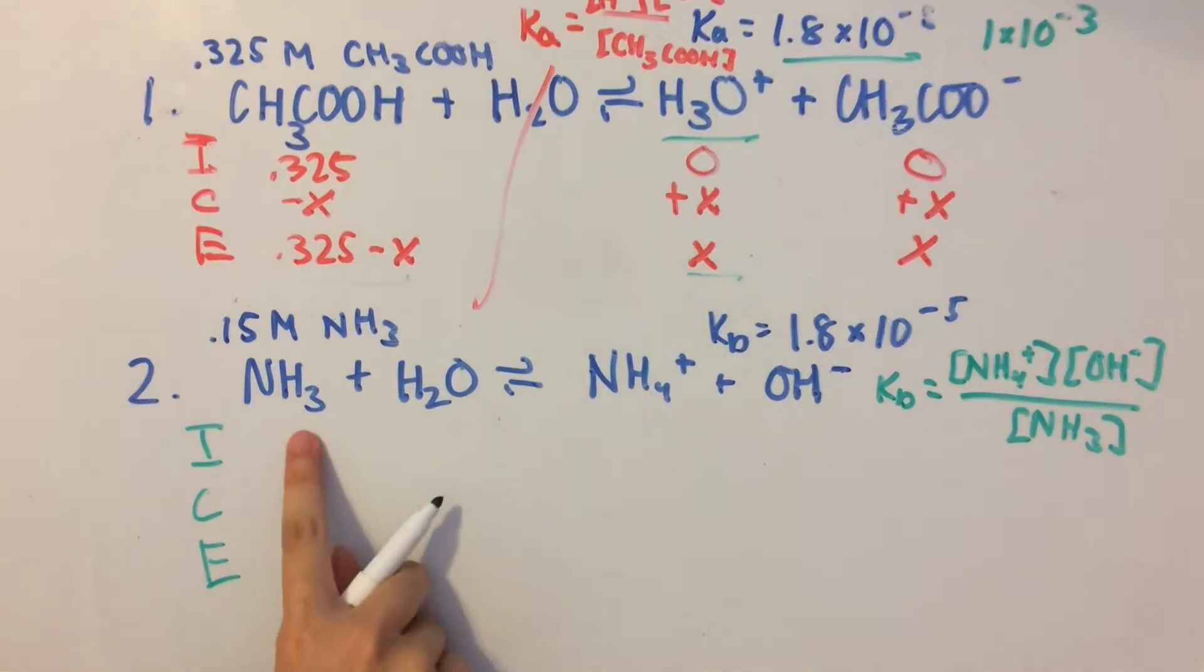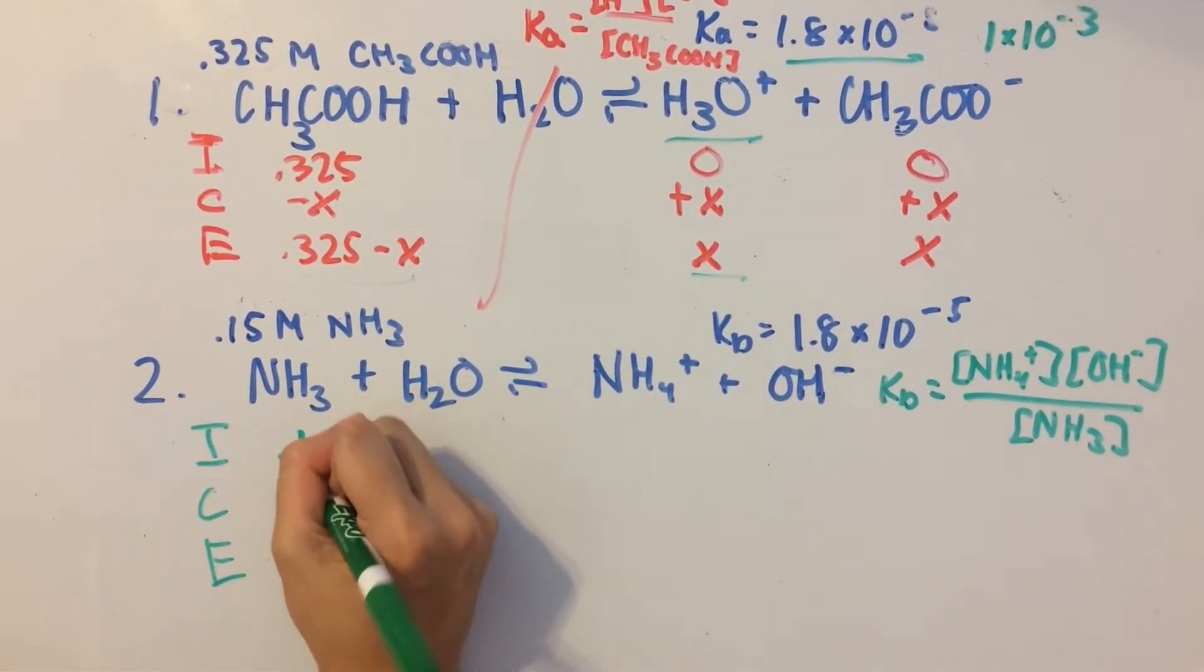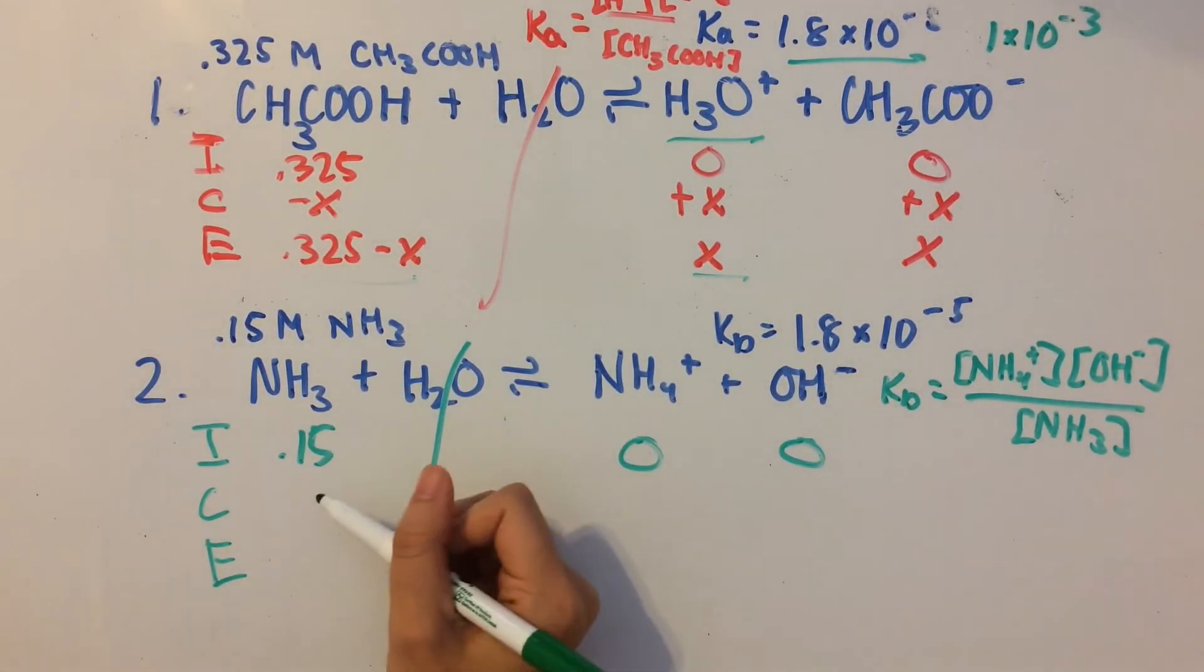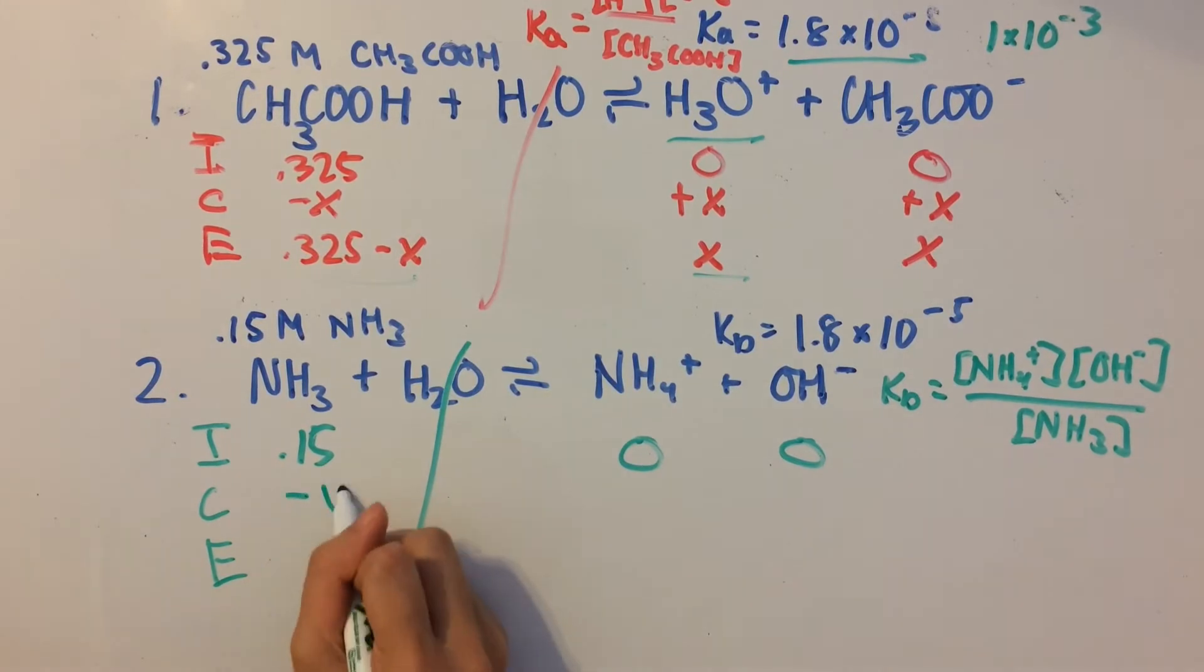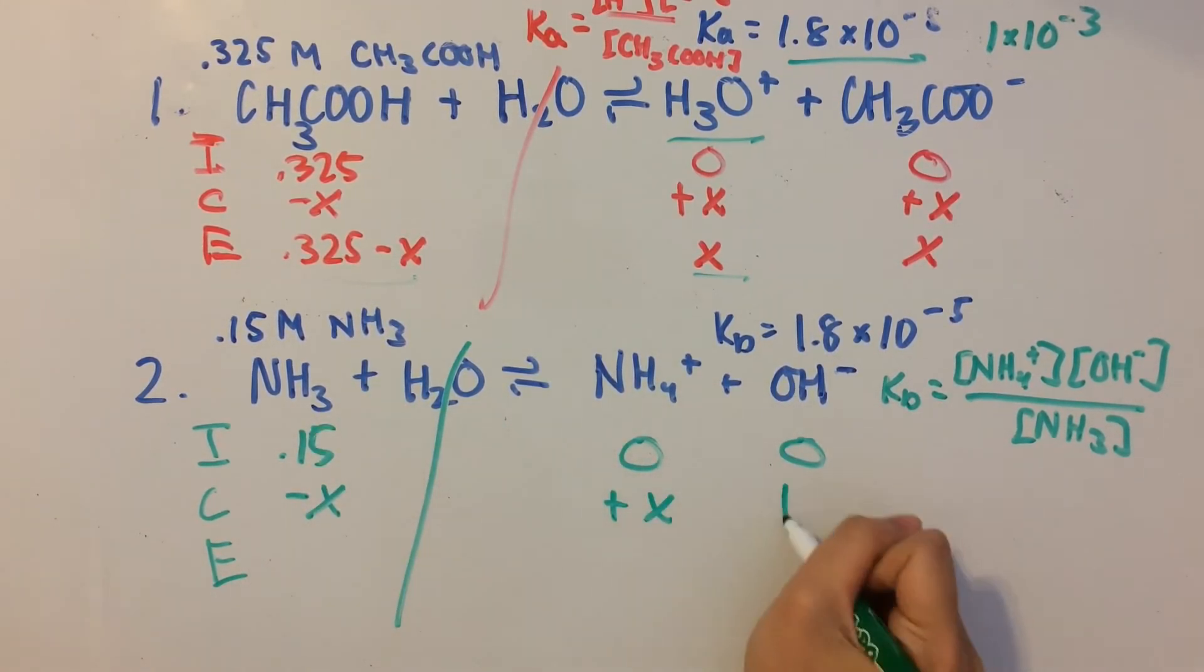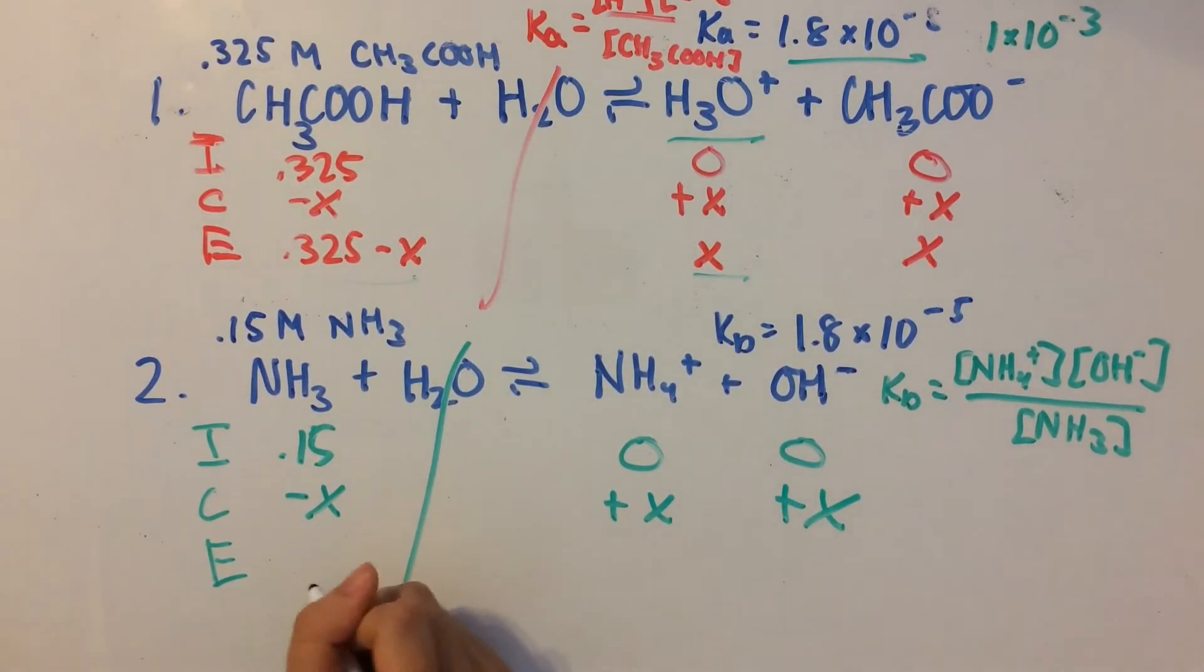Initial concentration we're given is 0.15 molar. We're not going to care about H2O. And these will be zeros. Now, it's going to be the same exact thing for the change because all the coefficients are 1. So minus x, plus x, and plus x. So we'll have 0.15 minus x, x, and x.